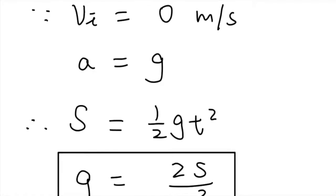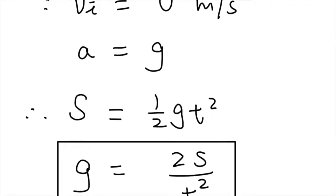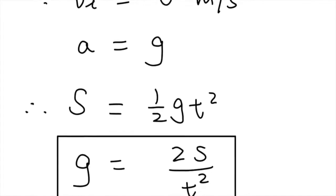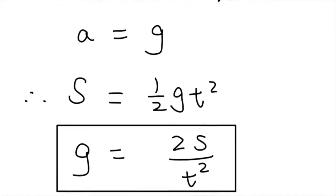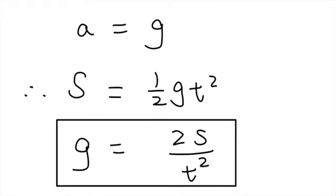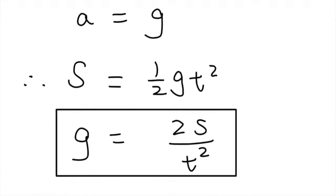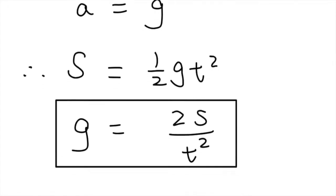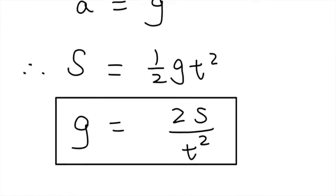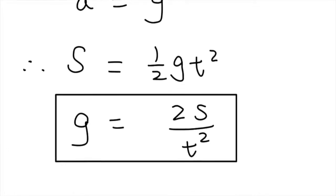S is the distance traveled by the object, which is the height of the falling. T represents the time of falling, which is also the variable we are going to get from the experiment. During a free fall, the only vertical acceleration applied on the object is the gravitational acceleration, the g. The equation then can be written in g equals 2S over t squared.